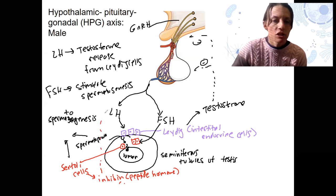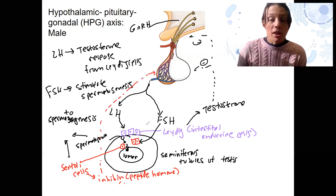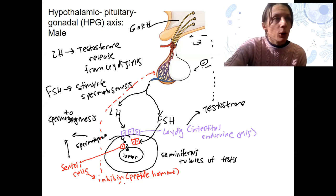So inhibin is going to feed back to inhibit this process as well. It actually feeds back just to the pituitary. So that way you can regulate spermatogenesis directly.